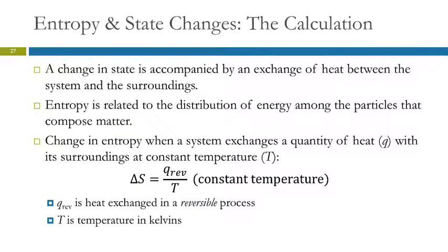The change in entropy occurs when a system exchanges heat with its surroundings at a constant temperature. We can write an equation for the change in entropy as being heat divided by temperature. Here the temperature is not changing, it's staying the same.